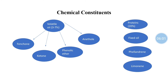The utility of the drug is due to the chemicals it contains, known as therapeutically active constituents. The main chemical constituent of fennel is volatile oil, present at 3 to 7 percent. The volatile oil mainly contains fenchone, ketone, phenolic ether, and anethole. The sweet taste of the drug is due to the presence of anethole. Other constituents include proteins at 20 percent, fixed oil, phellandrene, and limonene.